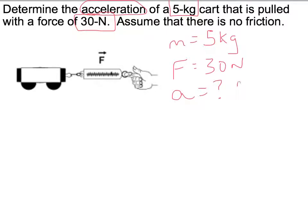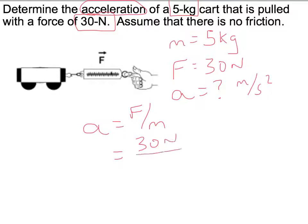We're asked to find the acceleration in meters per second squared. This problem is pretty straightforward as a Newton's second law problem — we just plug in the numbers and divide 30 by 5 to get 6 meters per second squared. But if that 30 newton force was applied to this cart with a drop and pull diagram, we'd have a different story. Let's check that out.